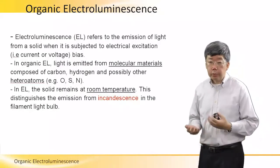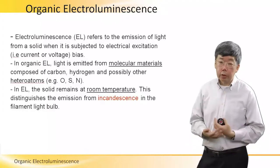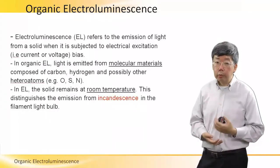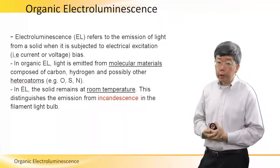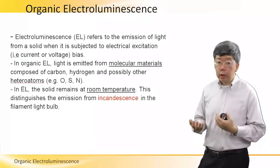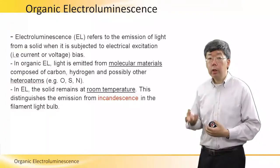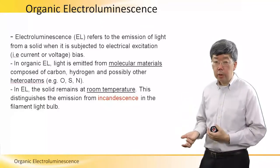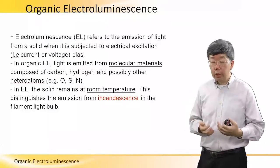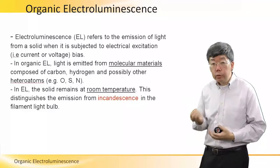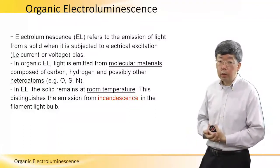In this slide we will explain what is organic EL. Electroluminescence, or EL, refers to the emission of light from a solid layer when it is being electrically excited by either a current or a voltage. This is called the bias. We can apply a voltage bias using a battery, or we can apply a current bias using a current source when we test these OLED devices.